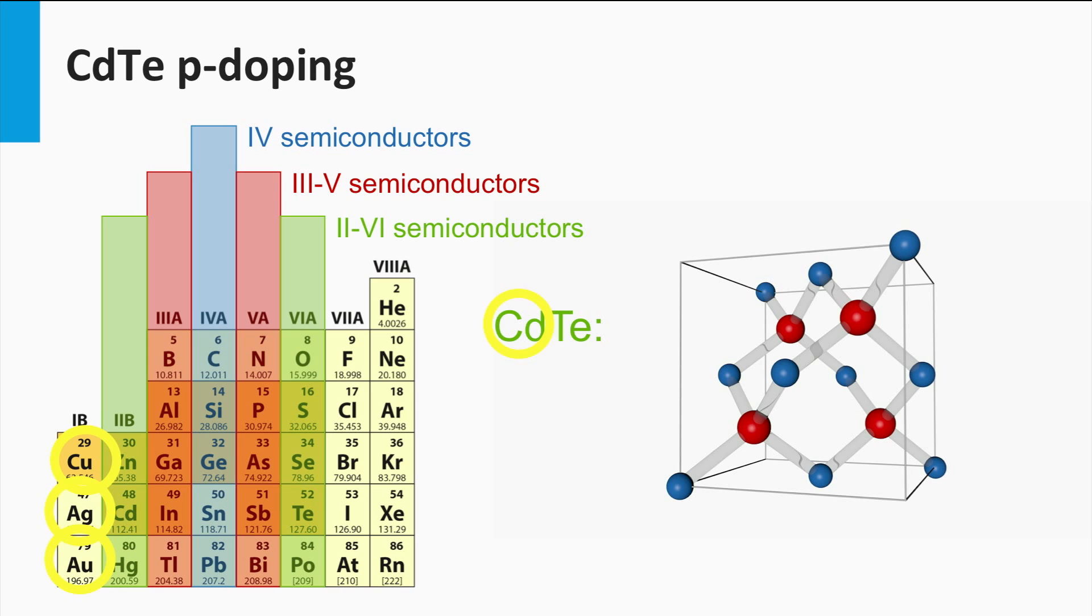P-doping of cadmium telluride can be achieved by replacing the two valence atom cadmium with a one valence electron atom like copper, silver, or gold. These elements act as shallow acceptors. P-doping is achieved as well by replacing a six valence tellurium atom with a five valence electron element like nitrogen, phosphorus, and arsenic. They act as shallow acceptors. A cadmium vacancy acts like an acceptor as well.